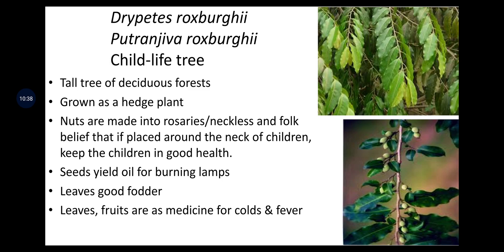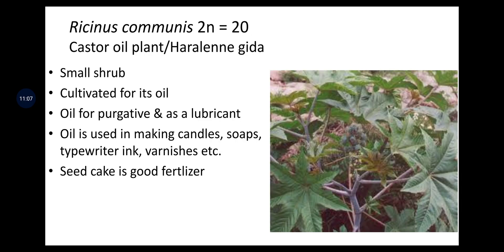Drypetes roxburghii, or child life tree, is a tall deciduous tree grown as a hedge plant. Nuts are made into rosaries or necklaces, and folk belief holds that if placed around the neck of children it keeps them in good health. Seed oil is used for burning lamps; leaves provide good fodder; leaves and fruits are used as medicine for colds and fever. Ricinus communis (castor, 2n = 20) is a small shrub cultivated for its oil, used as a purgative and lubricant, and in making candles, soaps, typewriter ink and varnishes. Seed cake is a good fertilizer.